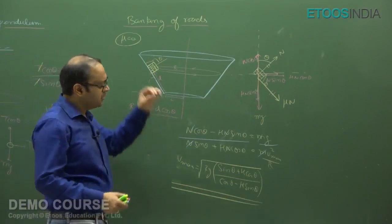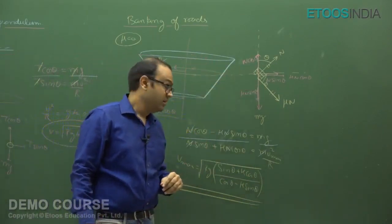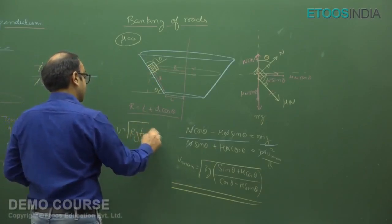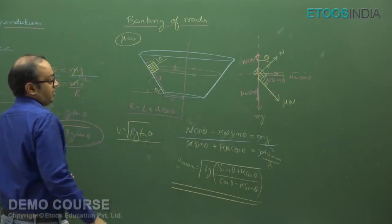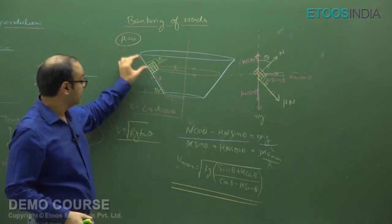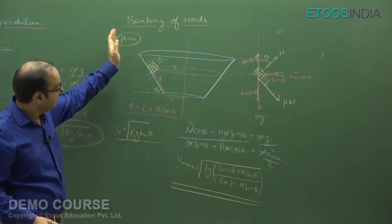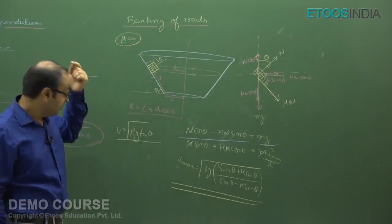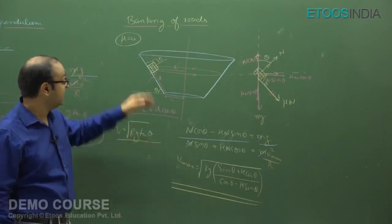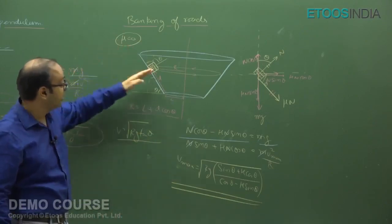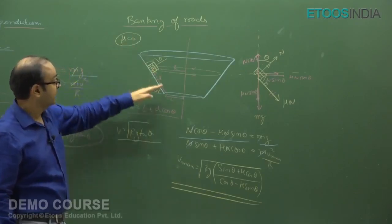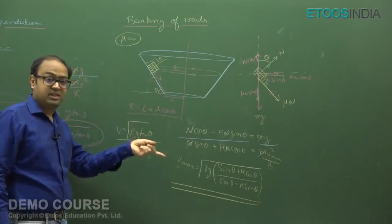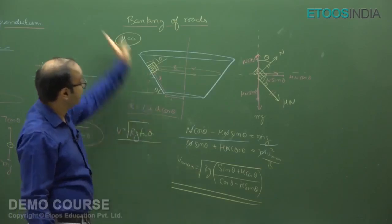For the minimum velocity: if velocity decreases below √(rg tan theta), the car tends to skid downwards and friction acts upwards to stop it. As velocity decreases further, friction acts more strongly upwards. At minimum velocity, the car is just about to slip downwards, so friction acts upwards at its maximum value μN.